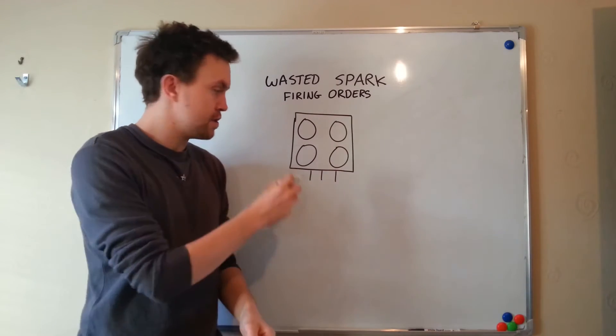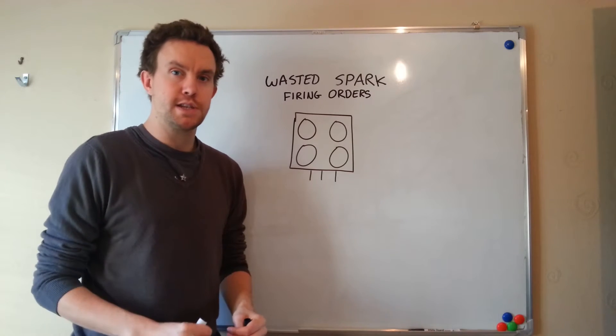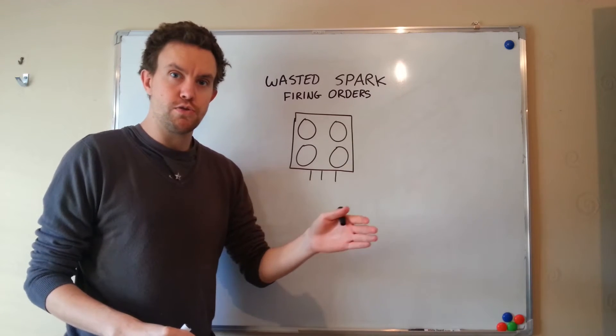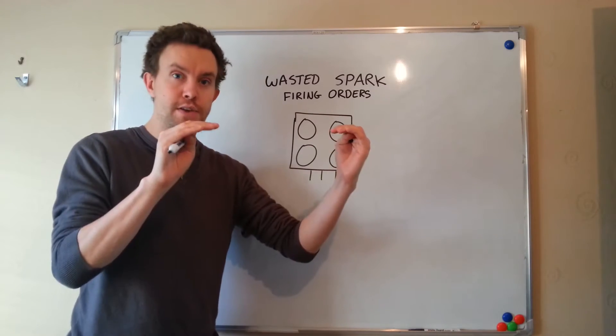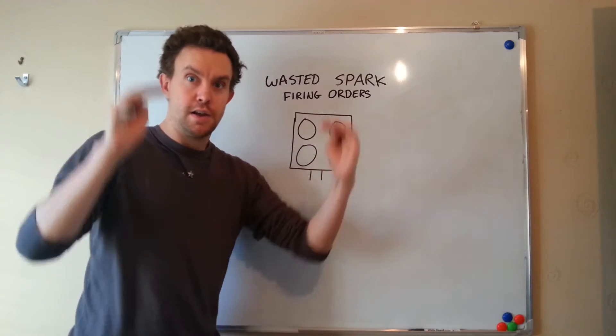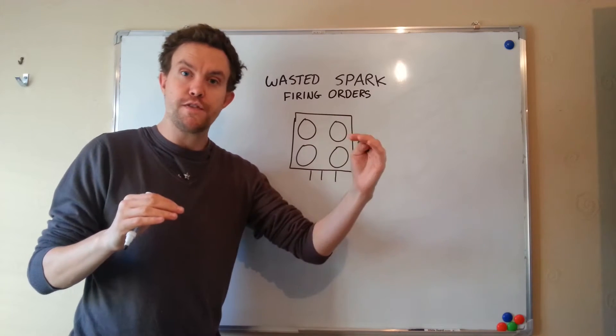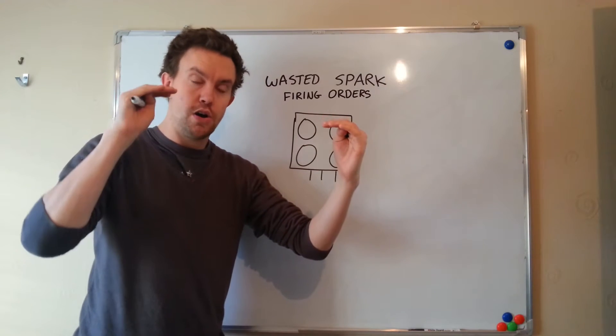In a diagrammatic form it looks like this. You have your three pins for signal and power and your four posts for the coils. Now, being wasted spark means that the system fires two spark plugs at the same time. One of them is on the exhaust stroke and one of them is on the compression stroke.